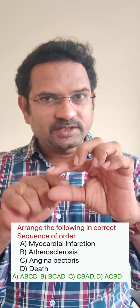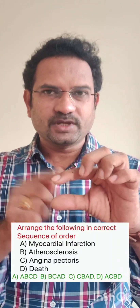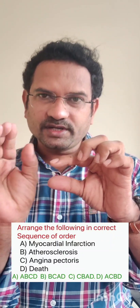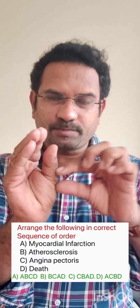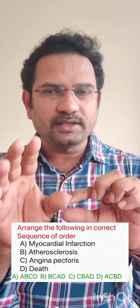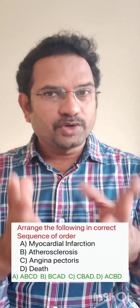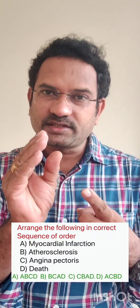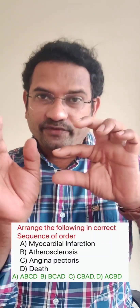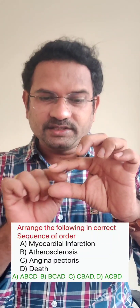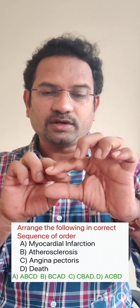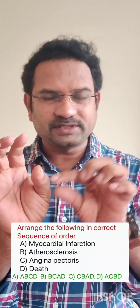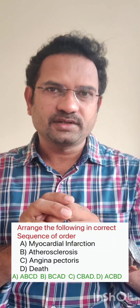When atherosclerosis is present, the heart does not get enough blood supply and gives pain — that is called angina pectoris. So the first event is atherosclerosis, and the next event is angina pectoris. If angina is converted to unstable angina, or complete platelet blockage occurs, blood supply to the heart is completely blocked — that is called myocardial infarction.